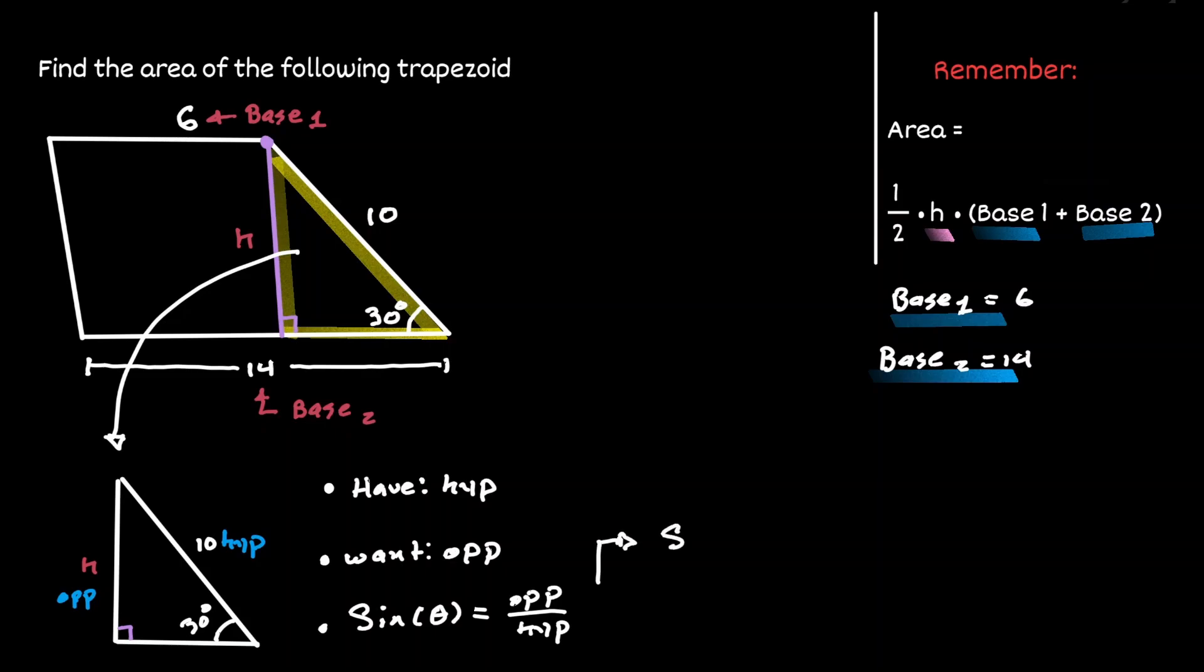Now let's plug in this information. The sine of 30 degrees is equal to h over 10.